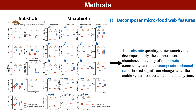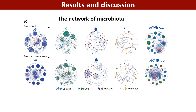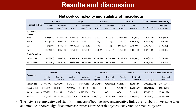Our results showed that the substrate quantity, the stoichiometry and decomposability, the composition, abundance, and diversity of the microbiota community, and the decomposition channel ratio all showed significant changes after the arable cropland was converted to a natural area. The network complexity and stability of the micro-food web, and the numbers of both the positive and negative links, the number of connectors, and modules all showed significant increasing trends.